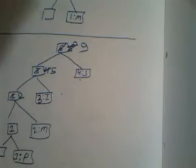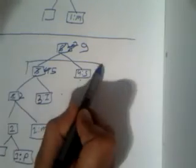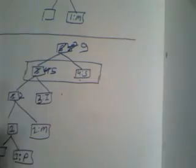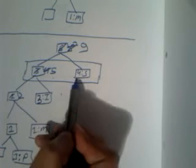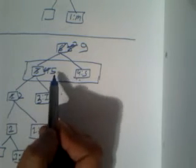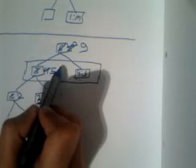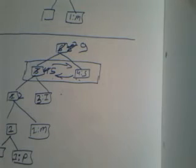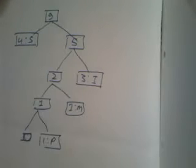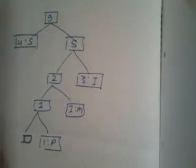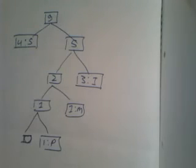Again we have a problem — 5 is greater than 4, it should be either less or equal. So we do the exchange: this node goes here and this node comes here. This whole section goes to the right and the other part comes to the left. This is the new tree.